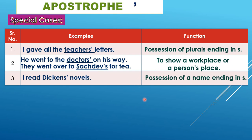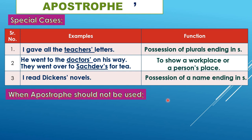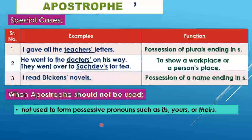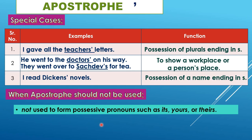Apostrophe is not used to form possessive pronouns such as 'its,' 'yours,' and 'theirs.' These are possessive pronouns and do not take an apostrophe. If you write 'it's' with an apostrophe, it means 'it is' — not the possessive 'its.' When using possessive pronouns, do not use apostrophes at all.